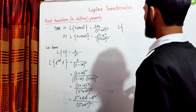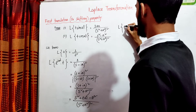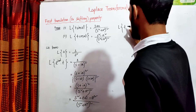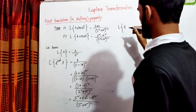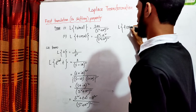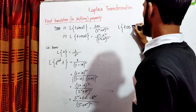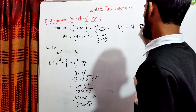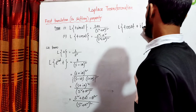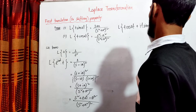e to the power iat, and e to the power iat into t equals t·cos(at) plus i·t·sin(at).